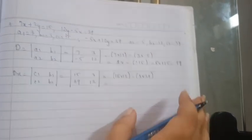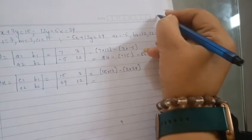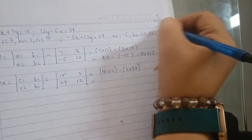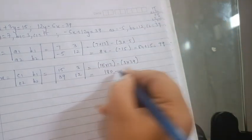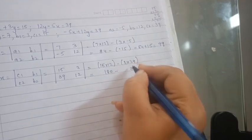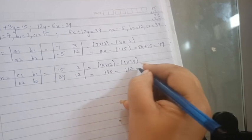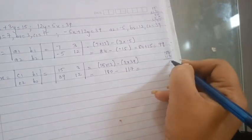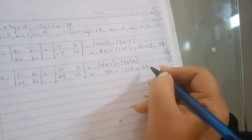Now find determinant of x: c1 c2 b1 b2 = 15, 39, 3, 12. So 15 into 12 minus 3 into 39 = 180 minus 117. 180 minus 117 = 63. So determinant of x is 63.